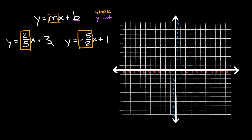Let's start graphing this first equation. When you're graphing equations in slope-intercept form, the first thing you do is graph the y-intercept. That number tells you where along the y-axis to plot your point. So we're going to plot a point on the y-axis at positive three. Then all you have to do is apply the slope starting from that point.